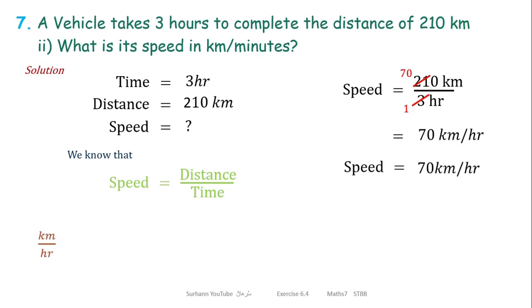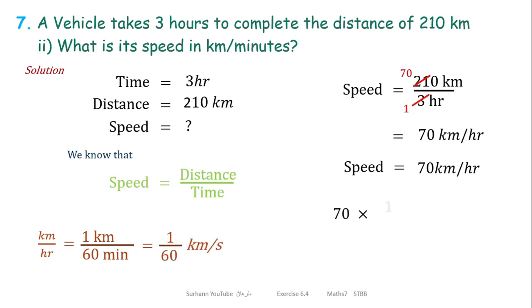Speed is in kilometer per hour and we have to convert it into kilometer per minute. First we find the speed for 1 kilometer in 1 hour, then multiply by 70 kilometers. Since 1 hour has 60 minutes, we multiply 1 over 60 by 70 to convert 70 kilometer per hour into kilometer per minute. Solve this calculation by yourself to get the answer.